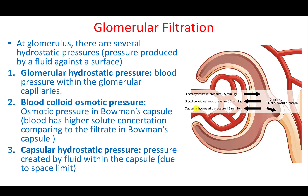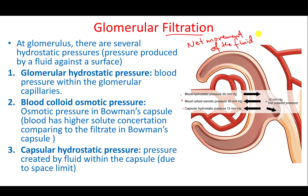Let's start with the first process: filtration at the glomerulus, or glomerular filtration. If you remember when we talked about the glomerulus, blood supply comes inside the capsule and filtration occurs there. There are three different driving forces for filtration to happen, and in general filtration can be thought of as the net movement of fluid through the glomerulus.